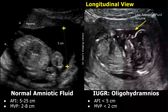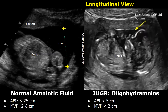Oligohydramnios, which refers to abnormally low levels of amniotic fluid, can be seen in IUGR. The two methods used to measure amniotic fluid are the amniotic fluid index, the AFI, and the maximal vertical pocket method, MVP. The normal AFI range is between 5 and 25 centimeters and the normal MVP range is 2 to 8 centimeters. In oligohydramnios, the AFI is less than 5 centimeters and the MVP value is less than 2 centimeters.